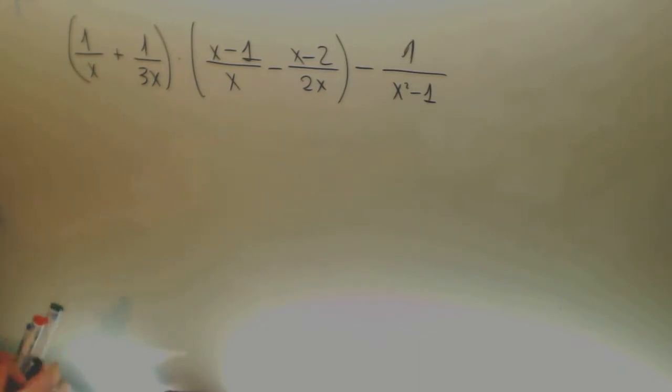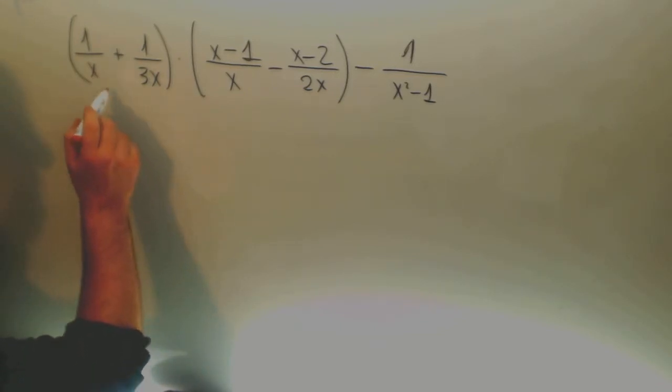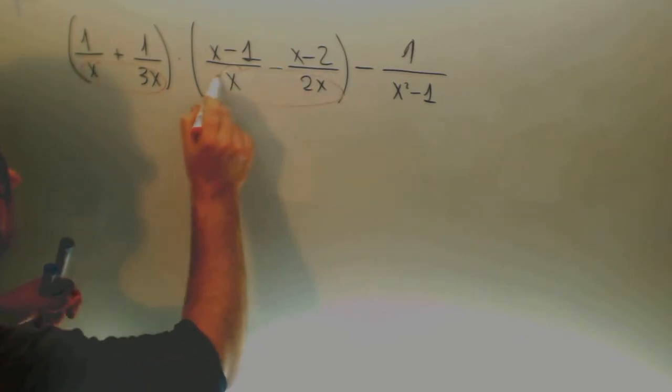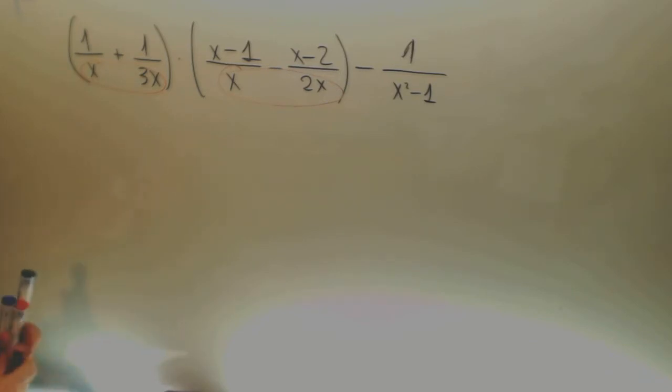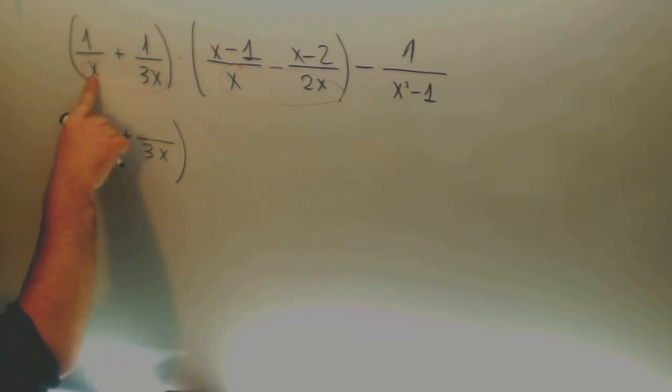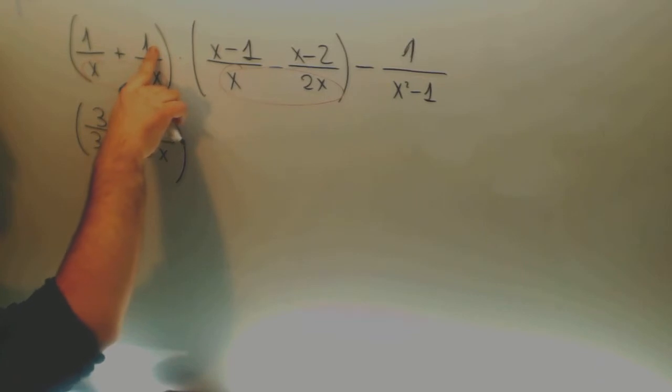First things first. The first thing you have to do is calculate the minimum common multiple between these two of them. Which is the minimum common multiple of x and 3x? 3x. 3x divided by x is 3 multiplied by 1, which is 3. 3x divided by 3x is 1 by 1, which is 1.